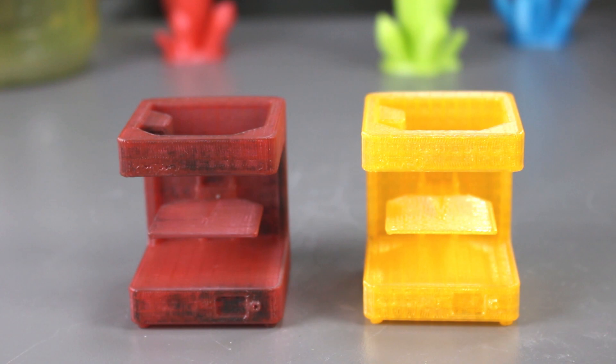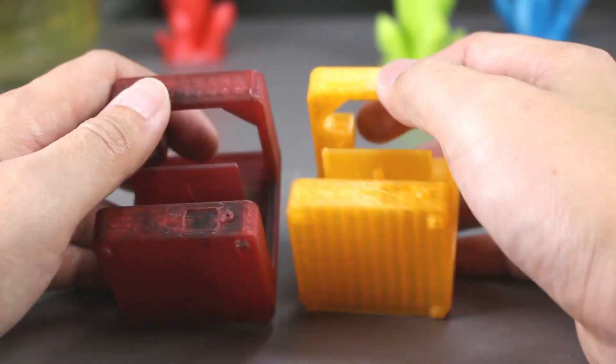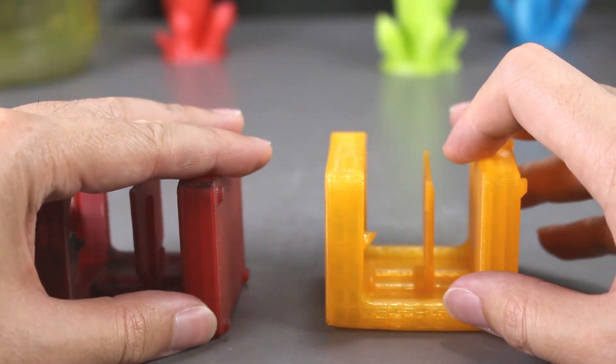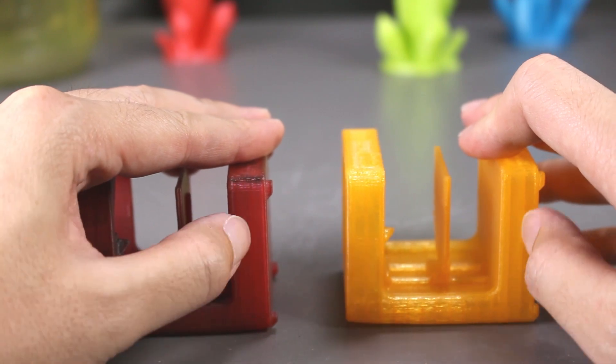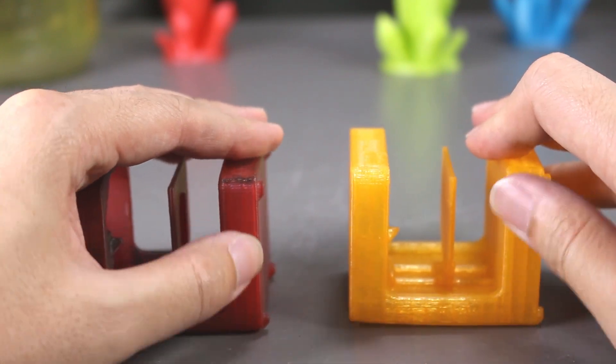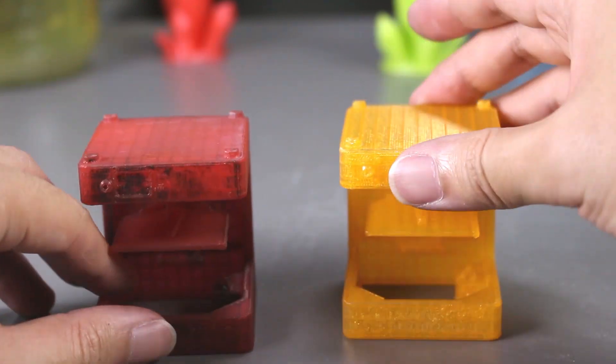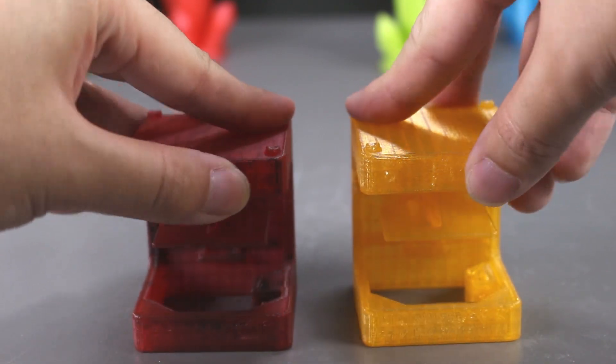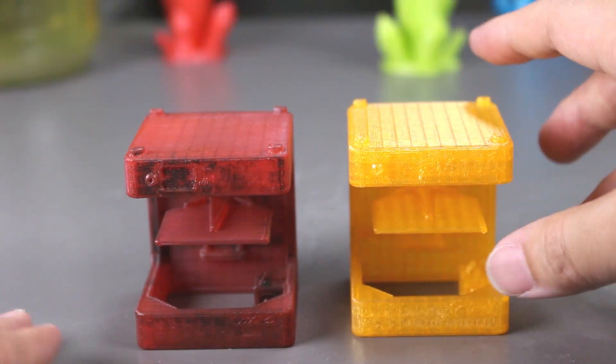Here's a comparison to one that wasn't put into the tumbler. Yeah, the sides feel relatively the same. As for the front face, the one we left in the tumbler is definitely smoother.